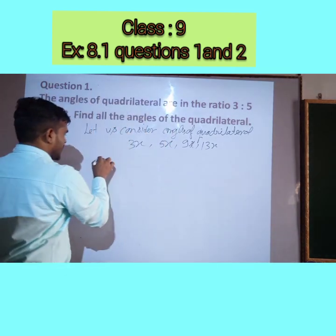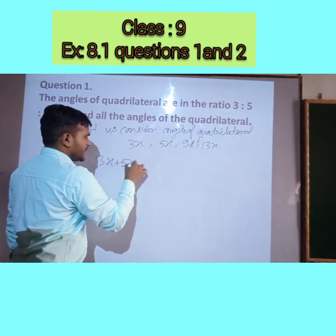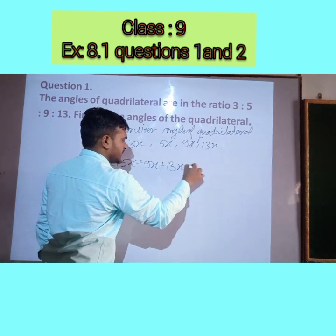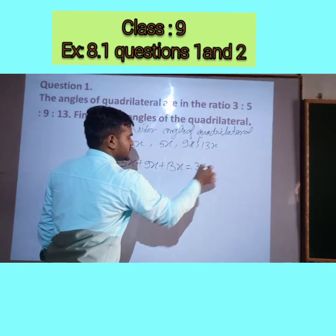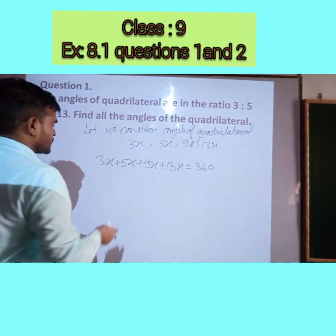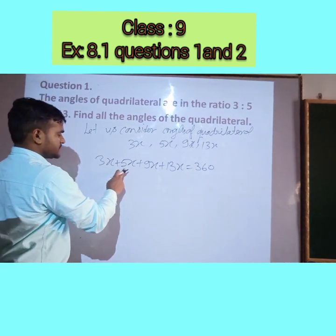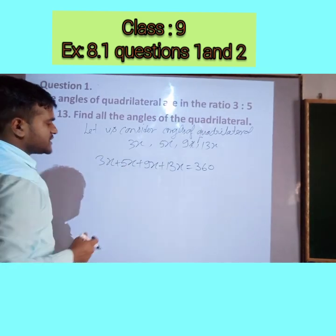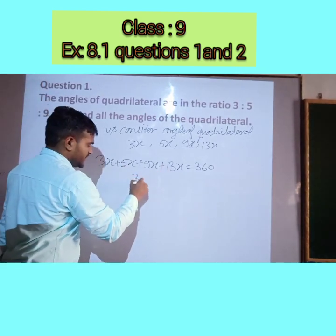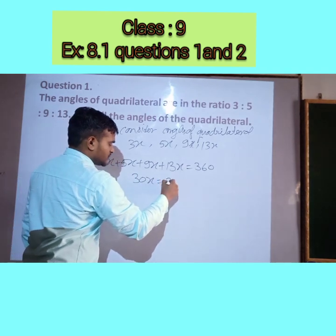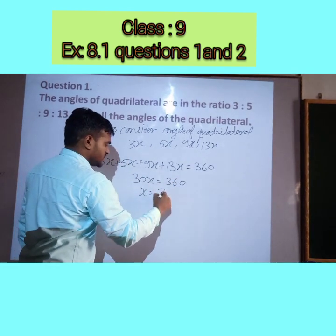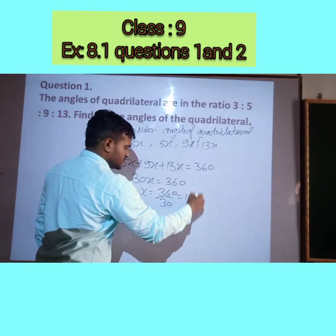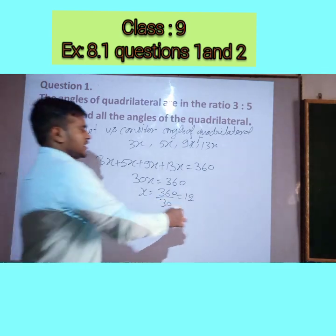So we can write: 3x + 5x + 9x + 13x = 360. Adding these: 3+5=8, 8+9=17, 17+13=30. So 30x = 360, which gives x = 360 ÷ 30 = 12. The value of x is 12.